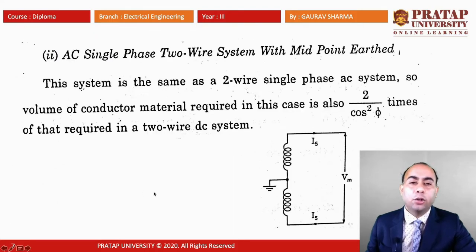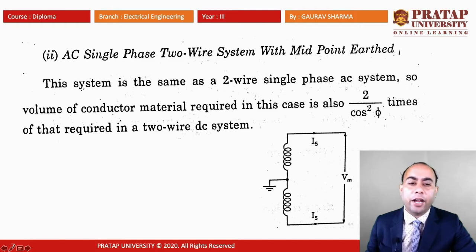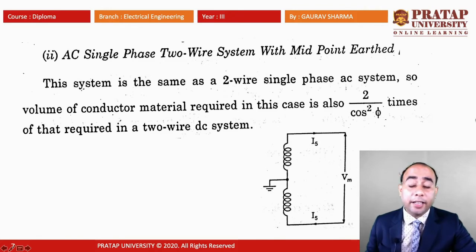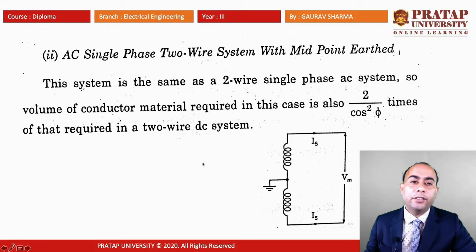For the single phase two wire system with midpoint earth, the current flow is I5 and the voltage is VM. This system is the same as the two wire single phase AC system, so the volume of conductor material required is also 2/cos²φ times that required in the DC two wire system.